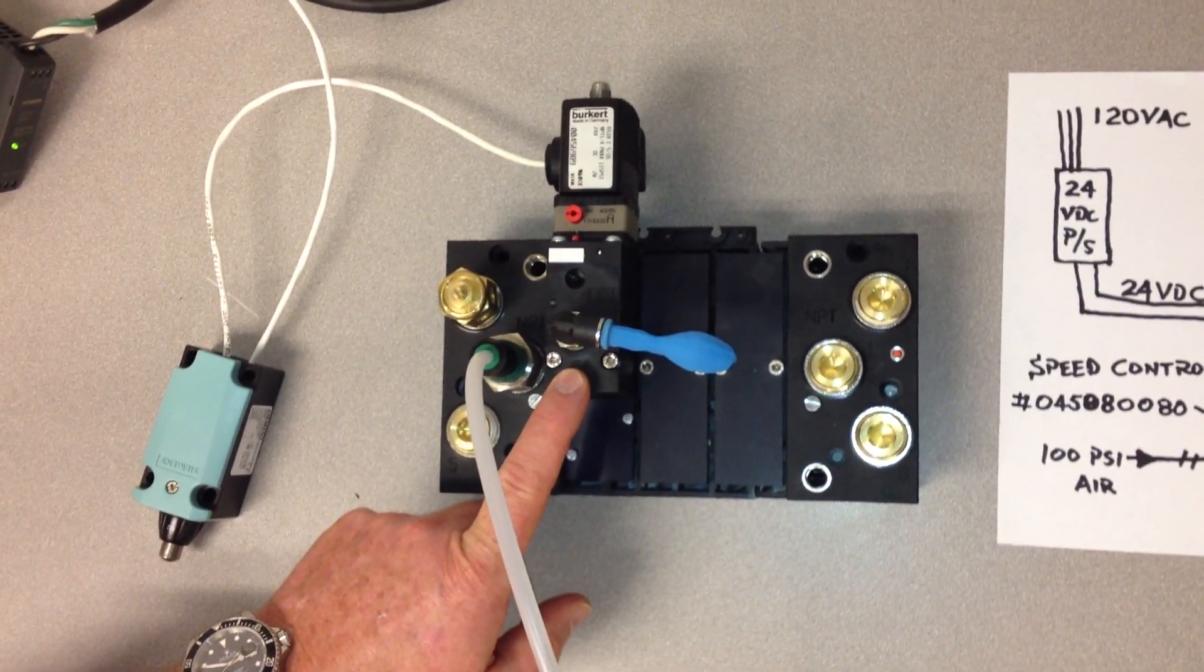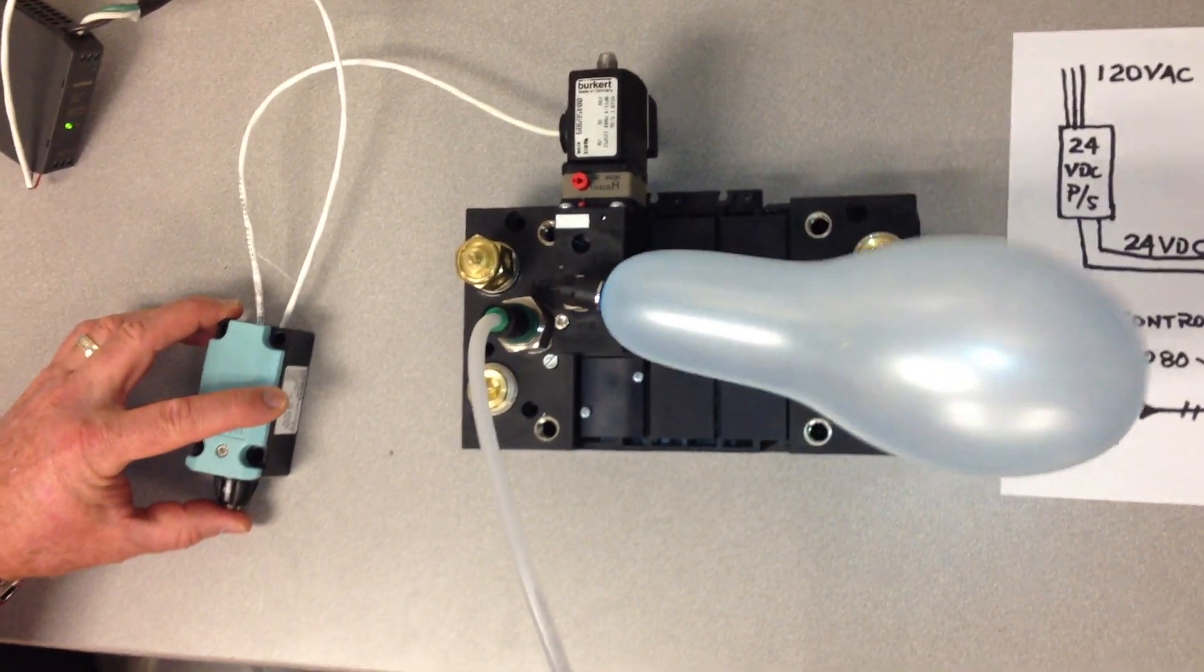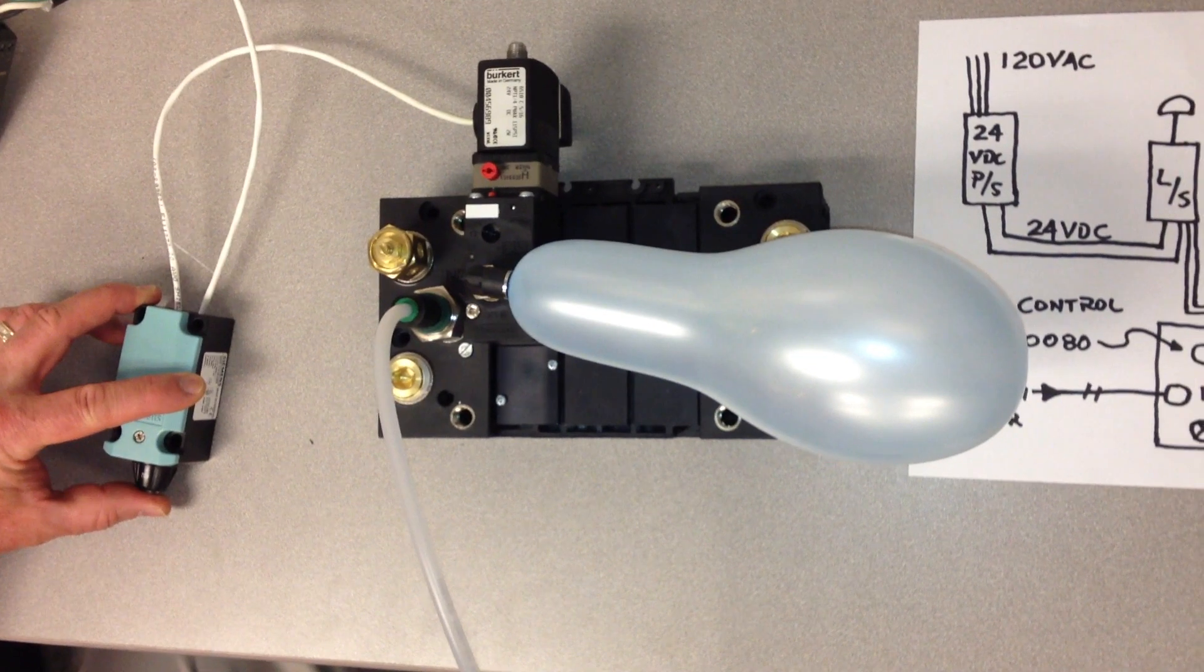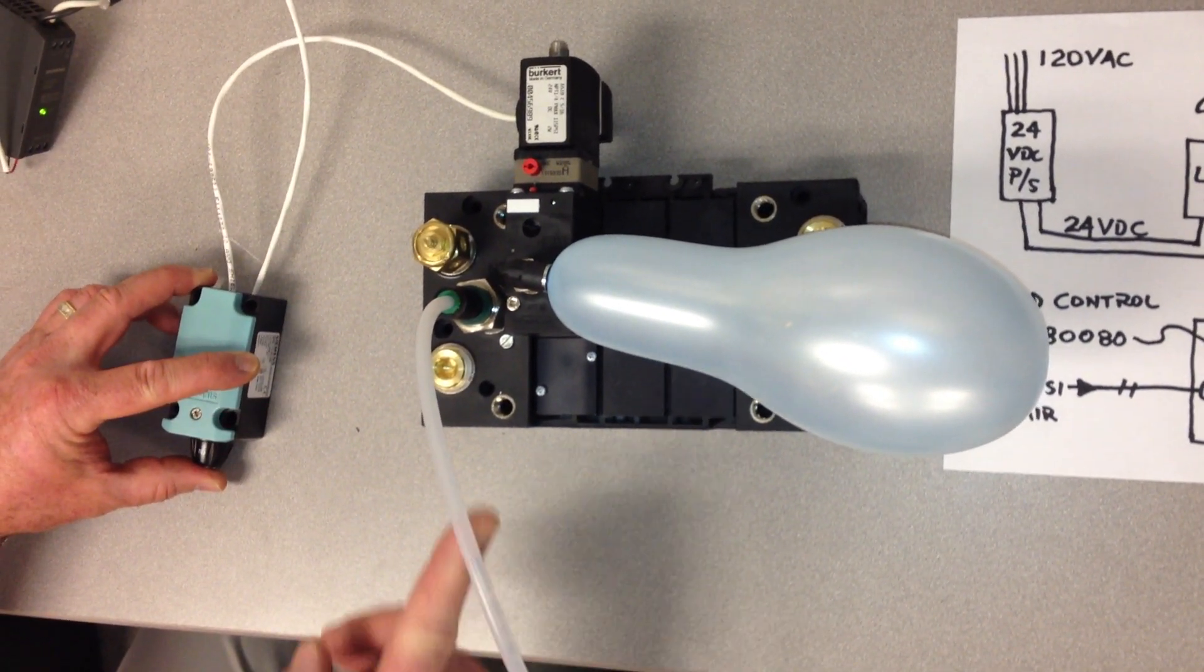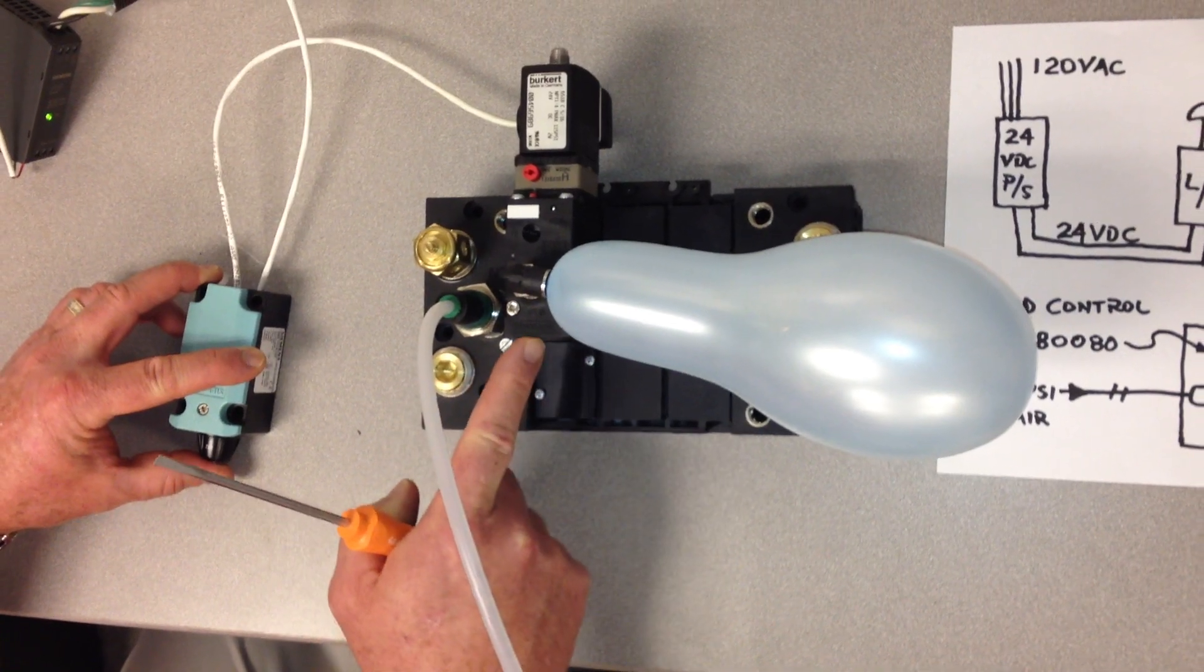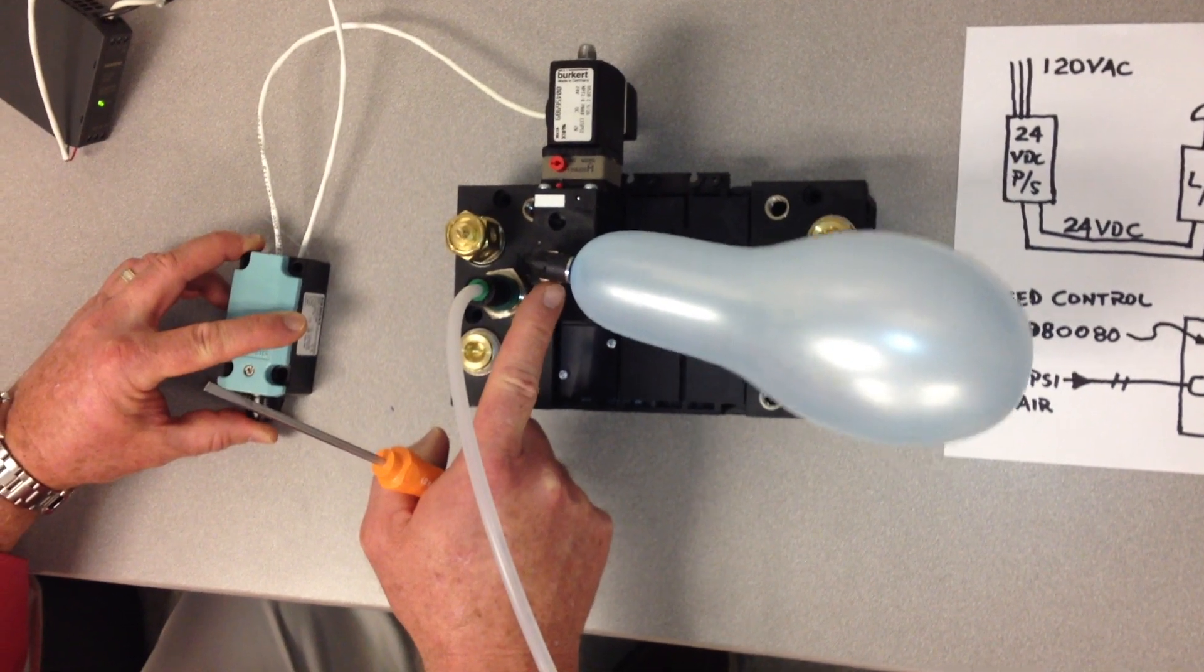So when we energize the solenoid valve, let's just see what happens. As long as I'm keeping power to the solenoid valve, air is flowing from the plant through the solenoid valve out port number two on the solenoid valve. There's only one port to attach to.